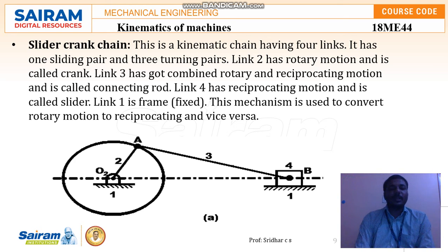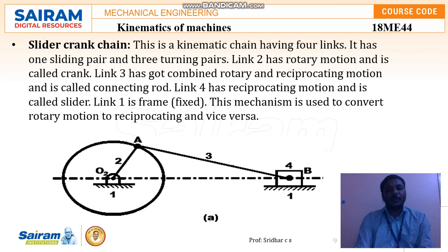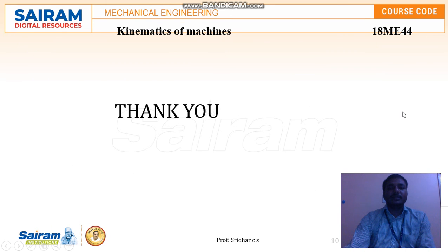These are some of the types of inversions of mechanisms. As we know, inversion of mechanisms involves a kinematic chain where by fixing different links we can obtain different types of mechanisms. These are some examples of obtaining different mechanisms by fixing different links. Thank you.